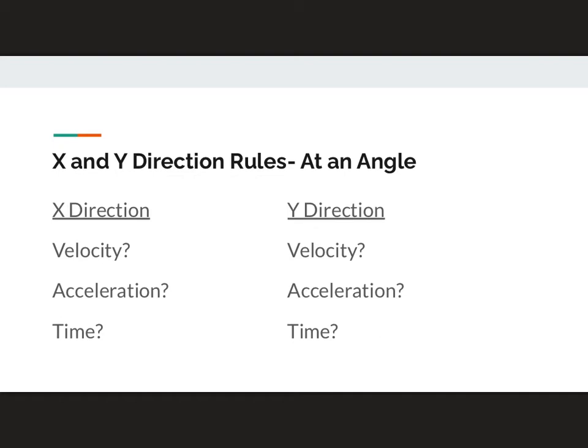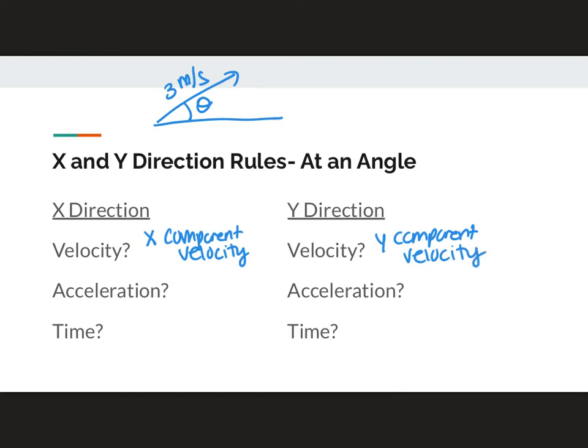Our second type of problem here is if something is launched at an angle. So let's say something's being launched at three meters per second at an angle. Now, at this point, I do have a velocity in the X and Y direction. So my velocity is not three meters per second. It is the X component of my given velocity. And in my Y direction, it's going to be the Y component. So the reason we've worked so hard on vectors is because I have to break it up.